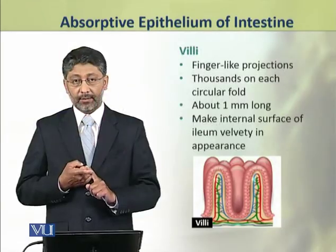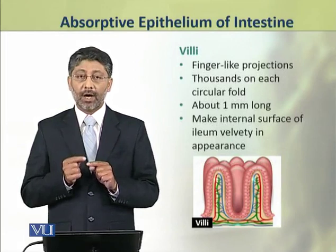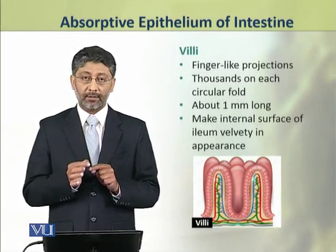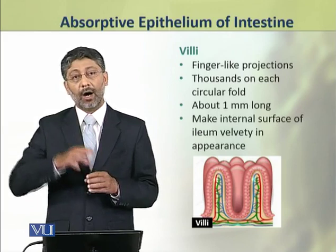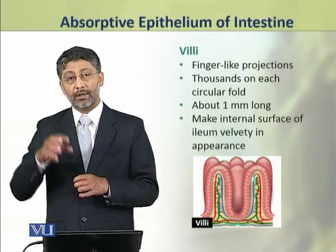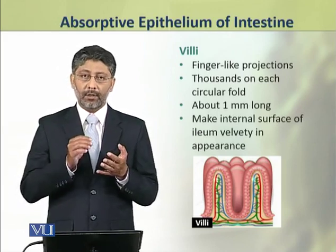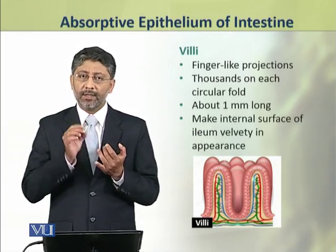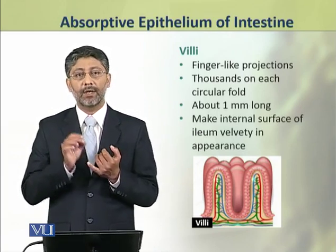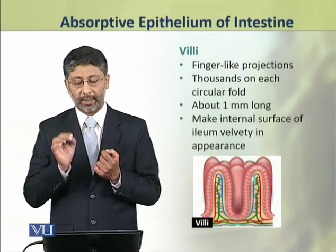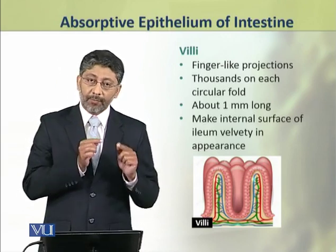Villi are finger-like projections which are present in thousands on the circular folds. Each villus is a small structure with a length of about 1 mm.